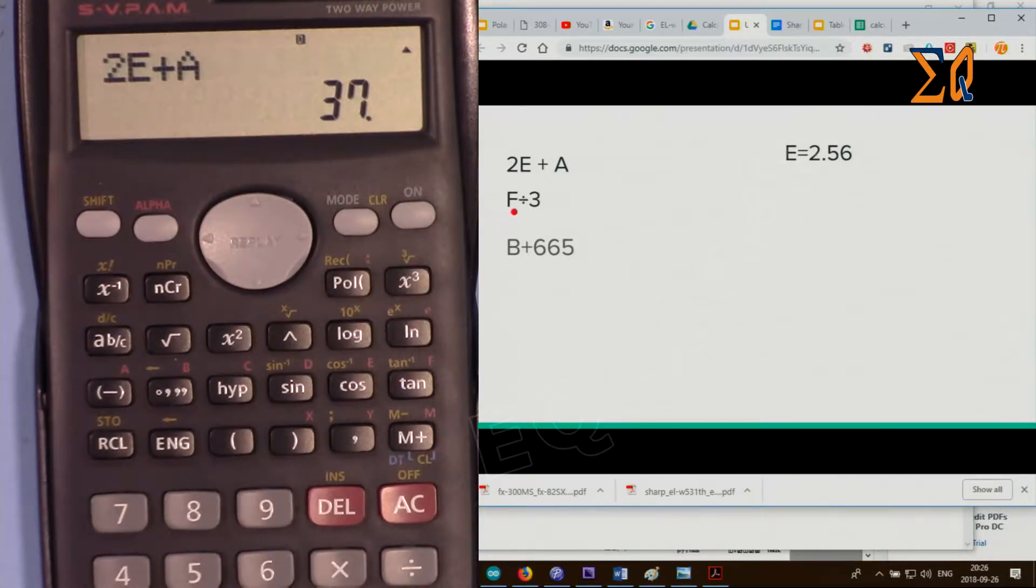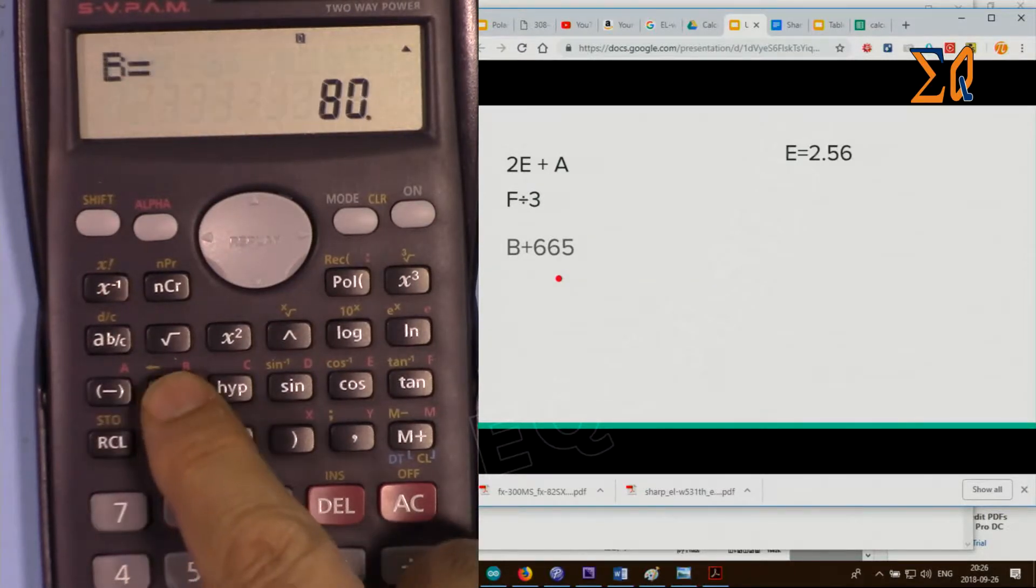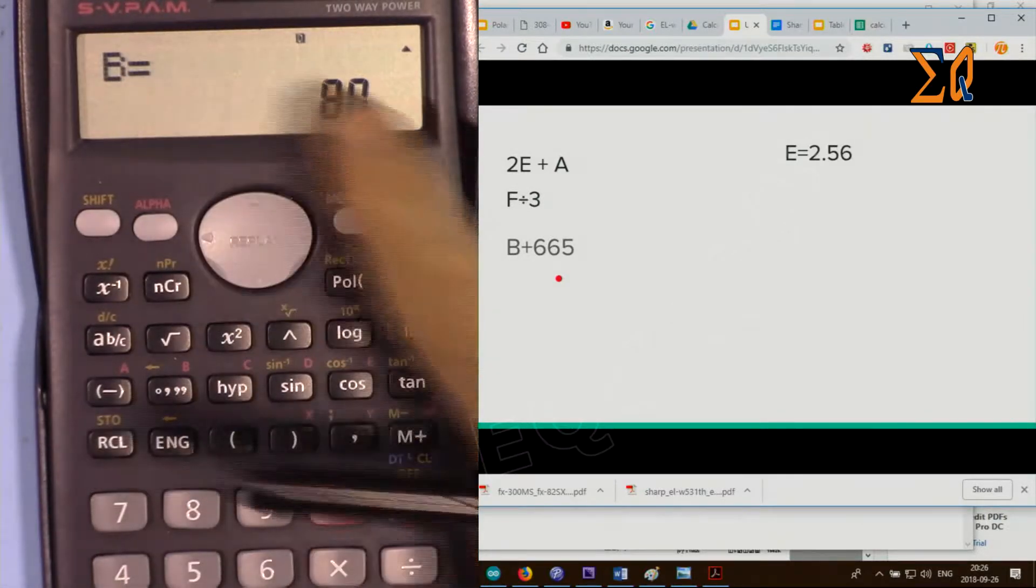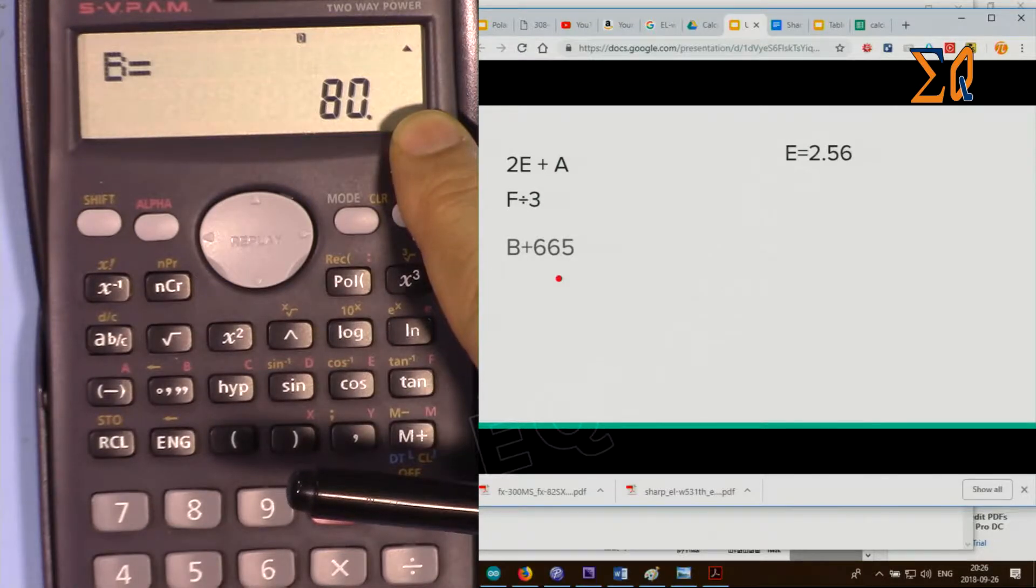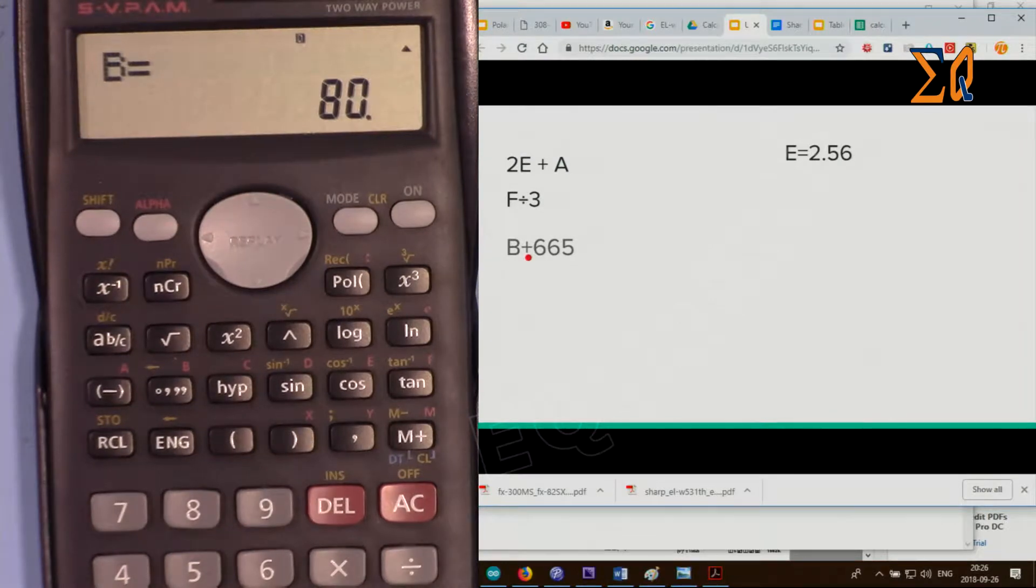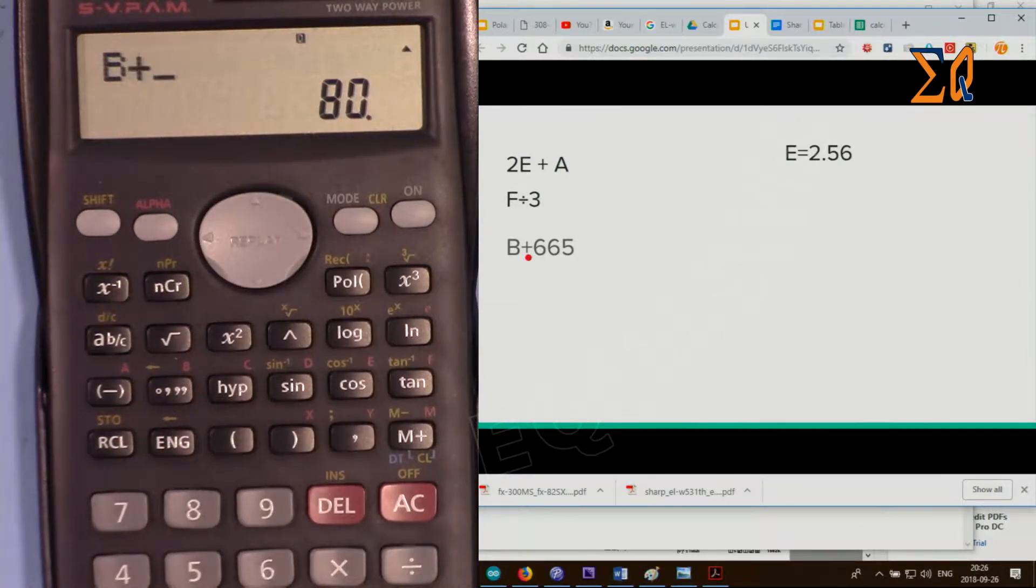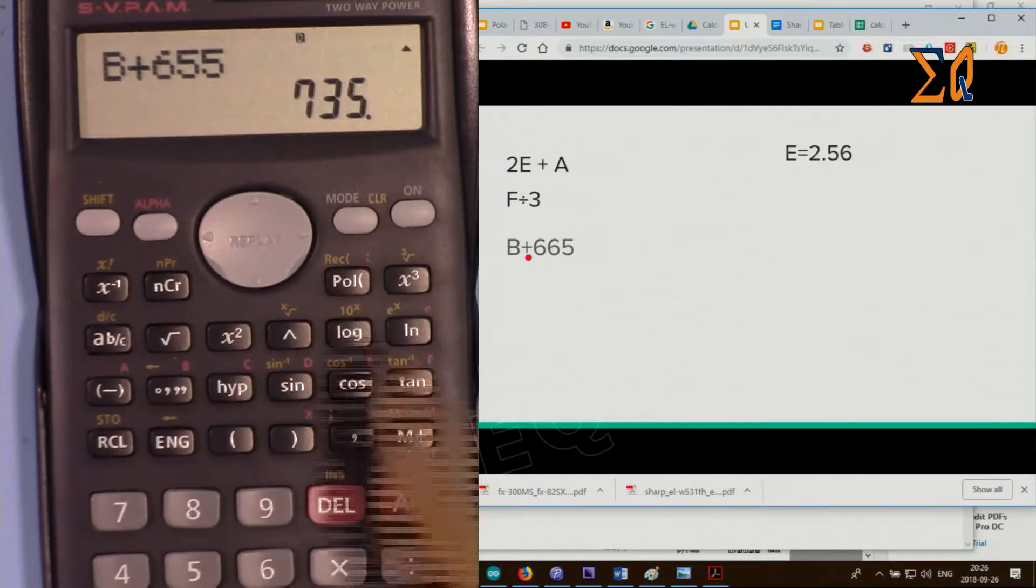Or F divided by 3: recall F divided by 3. Or B plus 655: recall B. You see here the equal sign, the value shows. It automatically uses the answer, but if you want to show it exactly like that, you can press left arrow plus 655. That also works.